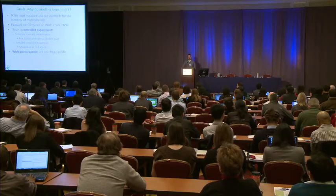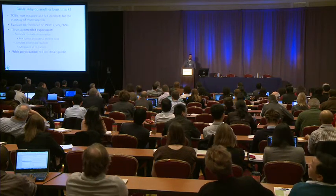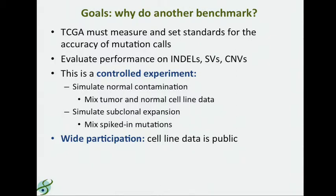Benchmark four is really a controlled experiment. We have these cell lines, and we can take advantage of their clonality to do things like simulate normal contamination. We can simulate subclonal expansions by using spike-in mutations. Spike-in mutations also give us the opportunity to evaluate false negative rates — they give us a ground truth — and that hasn't been possible in previous benchmarking efforts. Since the cell line genome data is publicly distributable, we can encourage wide participation both within TCGA and outside of TCGA. For instance, we're reaching out to ICGC and they're participating, and others outside of cancer genome consortiums with an interest in mutation calling in this tumor-normal context are encouraged to participate.